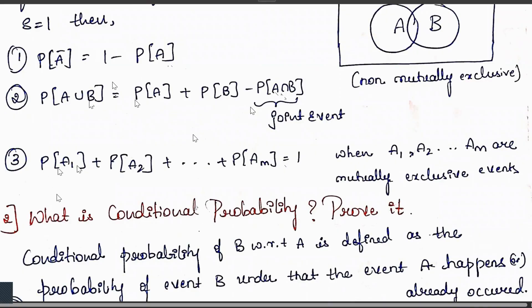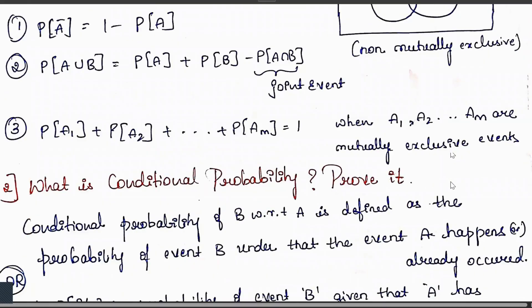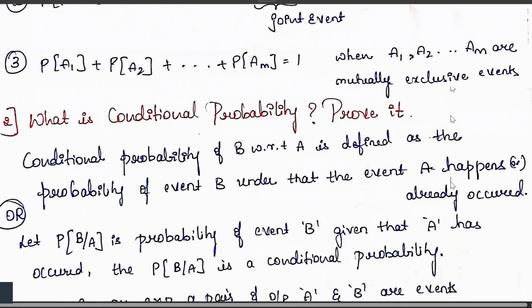Additionally, P(A₁) + P(A₂) + ... + P(Aₘ) = 1, meaning the total probability of all mutually exclusive events must equal 1.